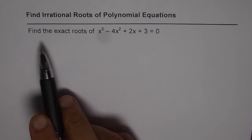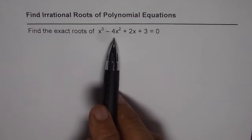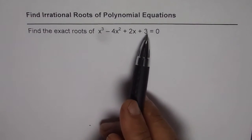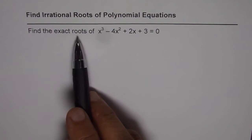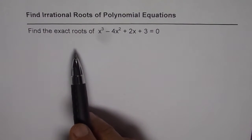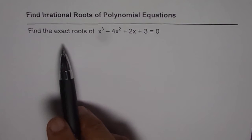The question is: find the exact roots of x³ - 4x² + 2x + 3 = 0. For exact roots, we will leave the answer in square root form. We will not write it in decimals.